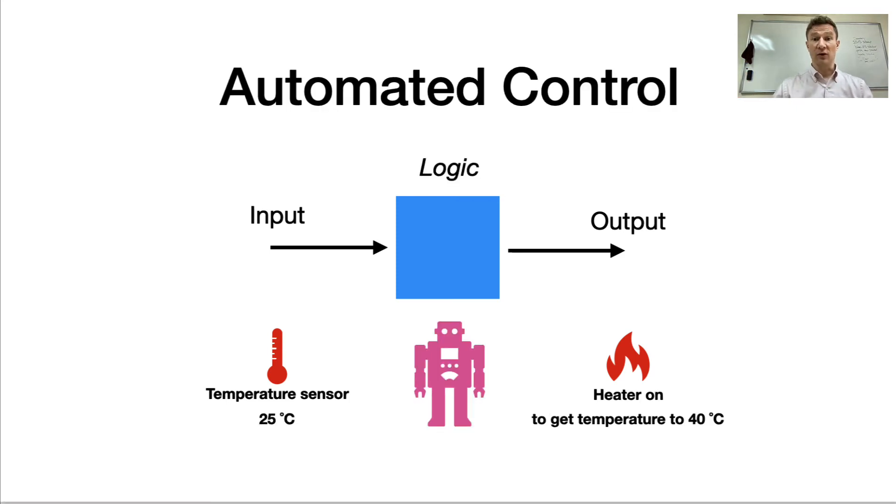Now, automated control is a little bit different. And this is what we talked about last semester. The idea here is that we have an input that is a temperature sensor and an automated system, a robot, a computer can use some logic to decide when that heater needs to be turned on. So simple logic, if the temperature is below 40 degrees, as I have in this slide, I'm going to turn on the heater.